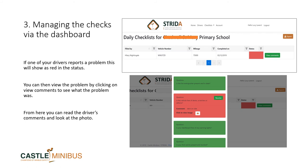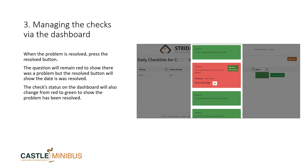You can view the problem by clicking on 'view comments' to see what that problem was. From here, you can read the driver's comments and also look at any photos they have uploaded. When an issue has been resolved, simply go back to the checklist and press the resolved button. The question will remain in red to show there was a problem, but the resolve button will now show the date it was resolved. This is important for your record keeping. The check status on the dashboard will then change from red to green to show that the problem has been resolved.